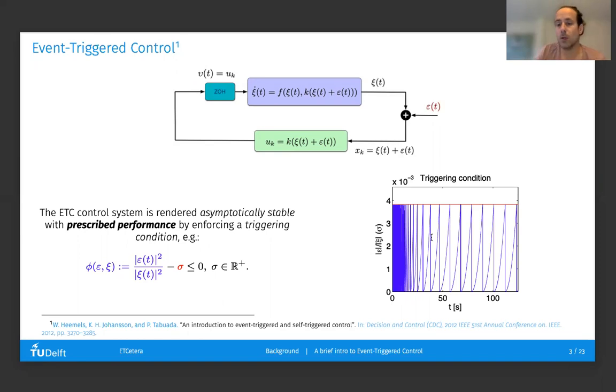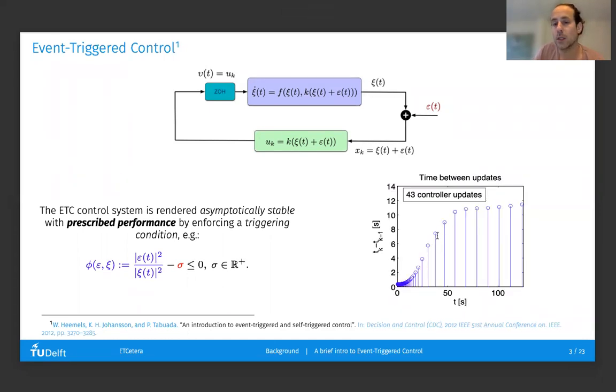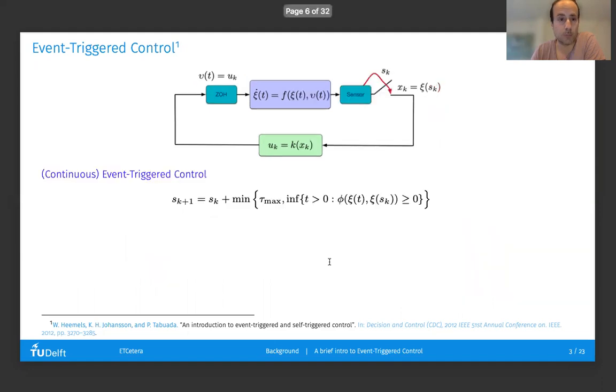Now, this typically looks like what you see on the right, where the triggering condition, whenever it's about to be violated, triggers a measurement. Therefore, the error is reset to zero and the condition goes back to being satisfied. And the timing between these events dictates the times between transmissions on this system. As you can see, this moves away from periodic sampling, where these bars should all have the same height, to something which changes over time and could be much more erratic than the example shown.